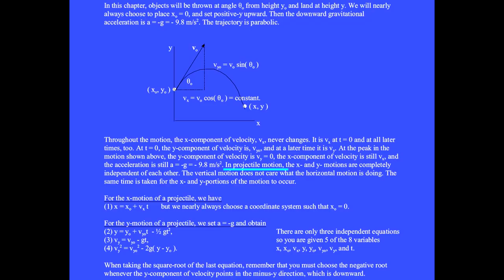In projectile motion, the x and y motions are completely independent of each other. The vertical motion does not care what the horizontal motion is doing. The same time is taken for the x and y portions of the motion to occur.